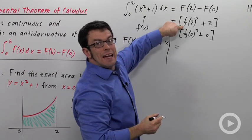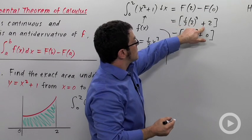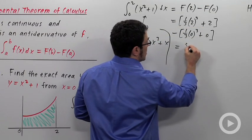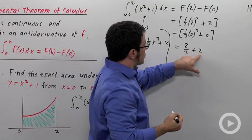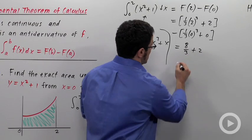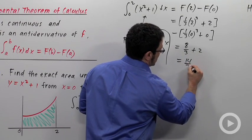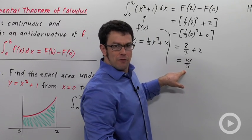1 third of 2 cubed plus 2 minus 0. So this is going to be our answer. 2 is 6 thirds. So this is 14 thirds or about 4 and 2 thirds.